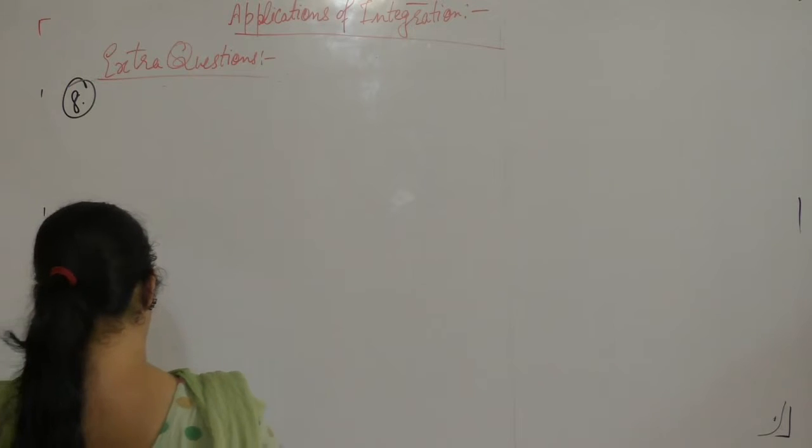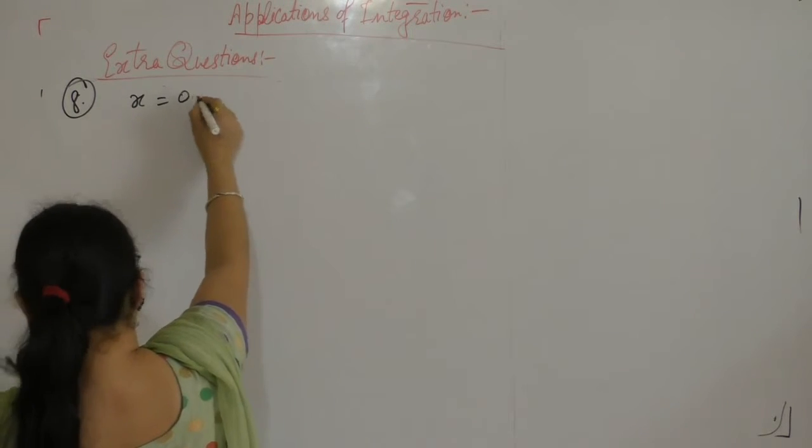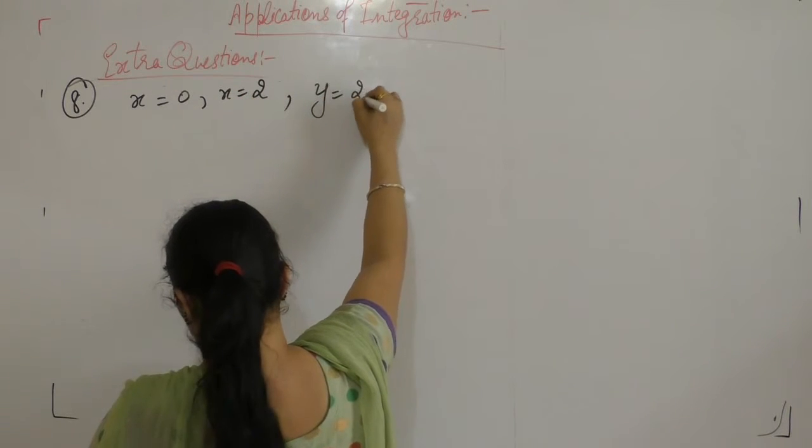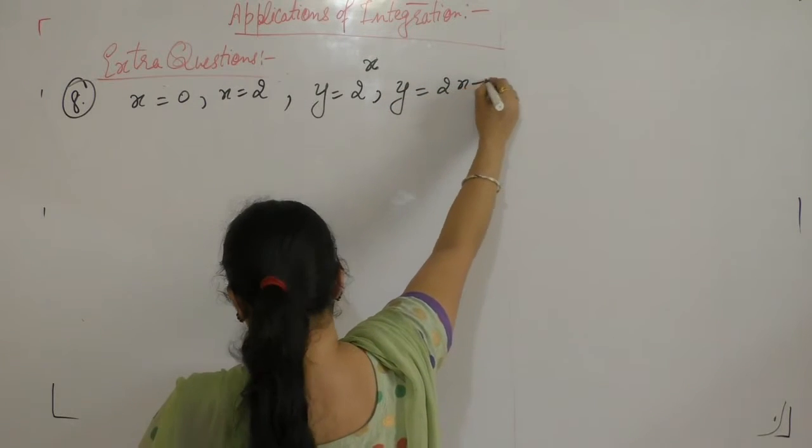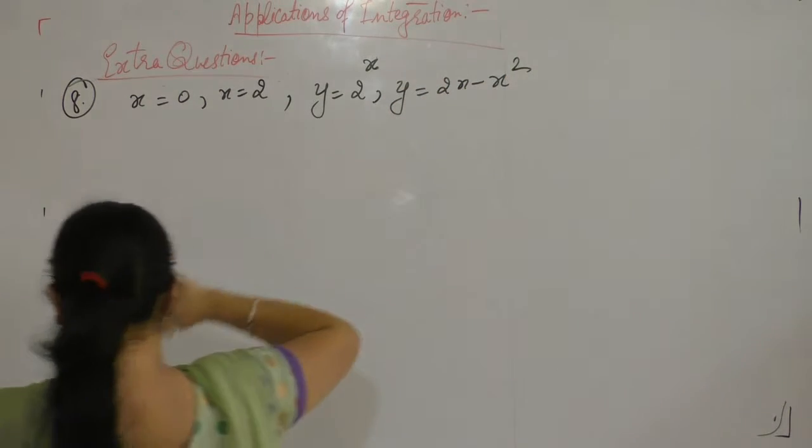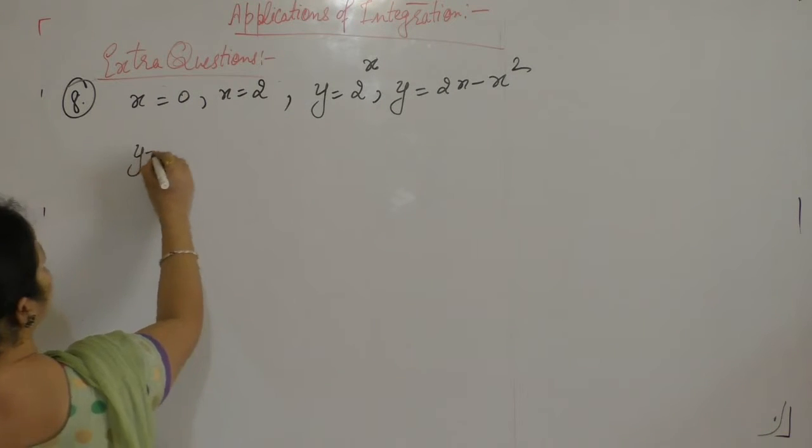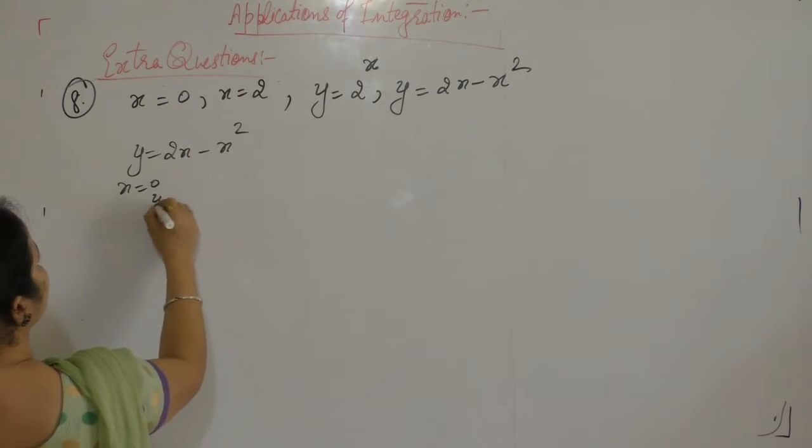Compute the area of figure bounded by the straight lines x equals 0, x equals 2, and the curves y is equal to 2 power x and y is equal to 2x minus x². y is equal to 2x minus x², when x is 0, y is 0.